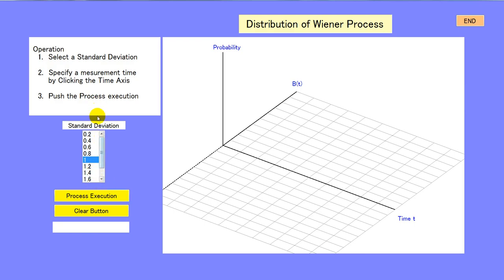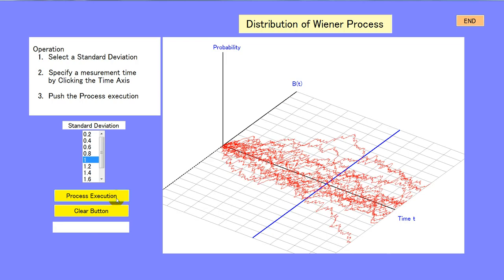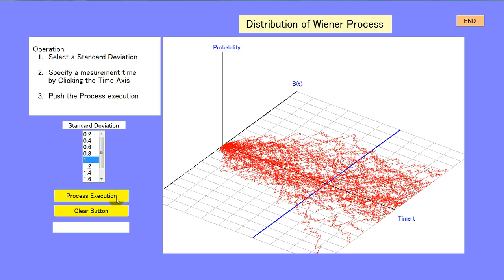Select a standard deviation and set the measurement time by clicking the time axis, then start. The simulation result — shown in green — is compared to the theory, shown as a blue curve, and good agreement is confirmed.